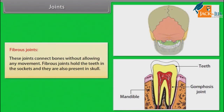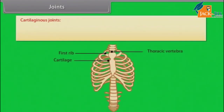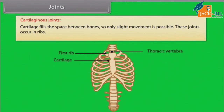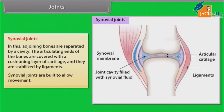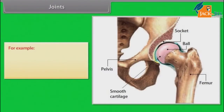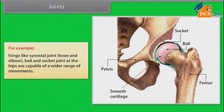Fibrous joints hold the teeth in the sockets and are also present in the skull. In cartilaginous joints, cartilage fills the space between bones so only slight movement is possible; these joints occur in the ribs. In synovial joints, adjoining bones are separated by a cavity; the articulating ends are covered with a cushiony layer of cartilage and stabilized by ligaments. Examples include hinge-like synovial joints such as the knee and elbow, and ball-and-socket joints at the hips, which allow a wider range of movements.